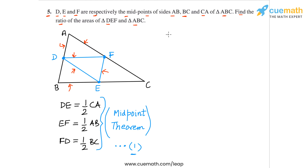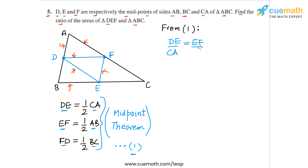From set 1, we can now calculate the ratio of corresponding sides. DE by CA will be equal to half. EF by AB will be equal to half. And FD by BC will also be equal to half. So DE/CA = EF/AB = FD/BC, and all three ratios are equal to half. Therefore the two triangles will be similar.